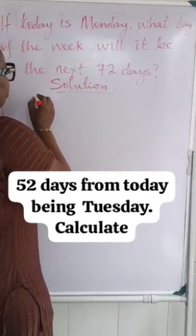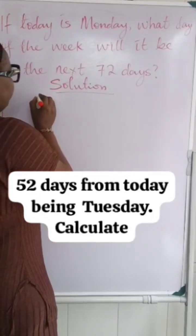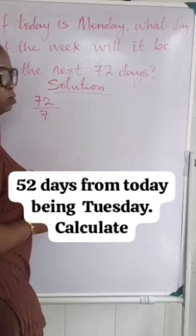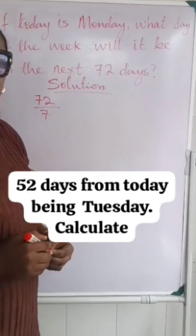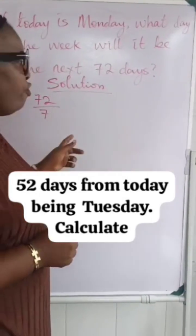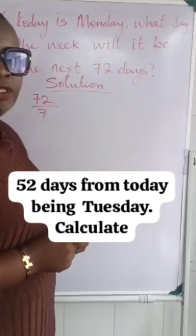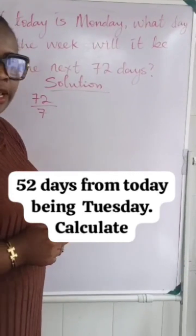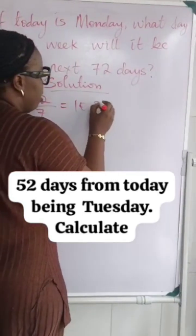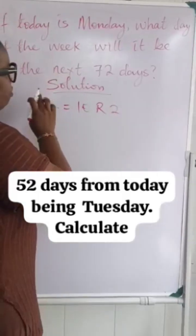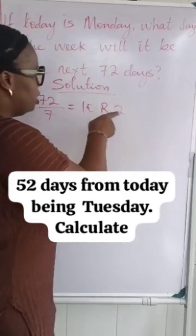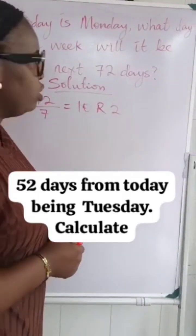So here you have to do 72 days divided by seven. How many sevens will you find in 72? That is 10, right? We are going to have 10 remainder two, because seven times 10 is 70, plus two days — that is the remainder of two.